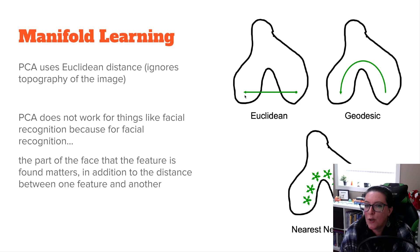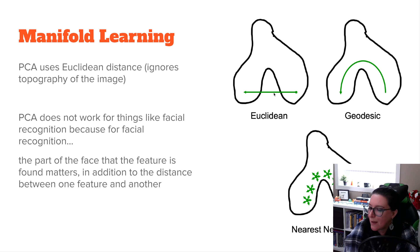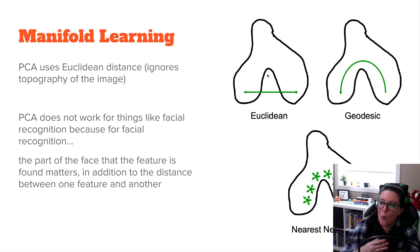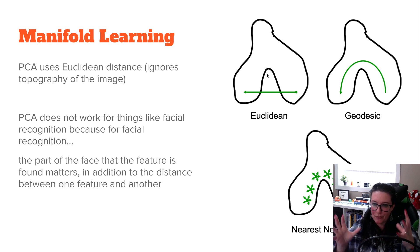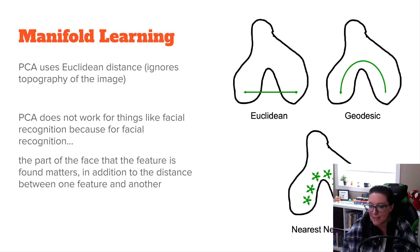The problem is that Euclidean distance ignores the topography of the image. Suppose we have this really weird wishbone-looking image. If we were looking at the relationship between a data point here and a data point here, Euclidean distance goes through a straight line and assumes a linear relationship — but the image has an outside boundary, and that fact is completely ignored. It doesn't take into consideration the actual framing or features of that image. So we want something that is not going to use Euclidean distance.